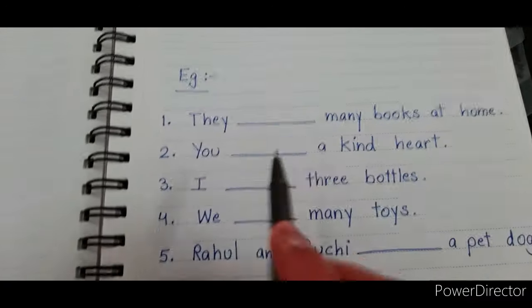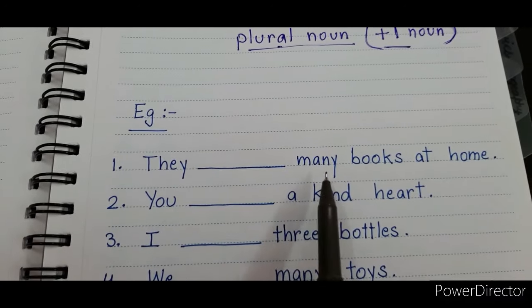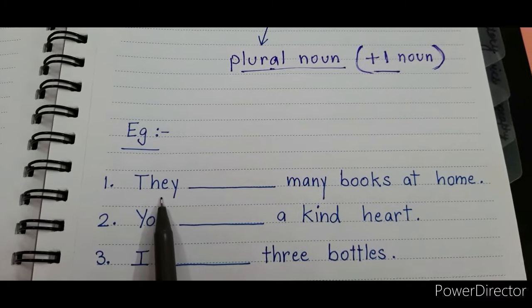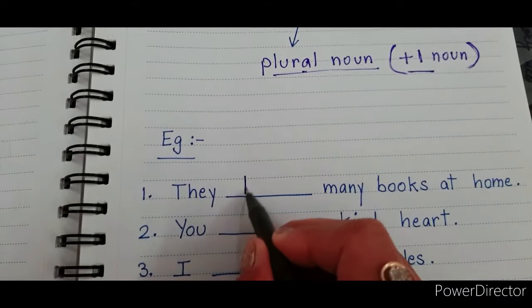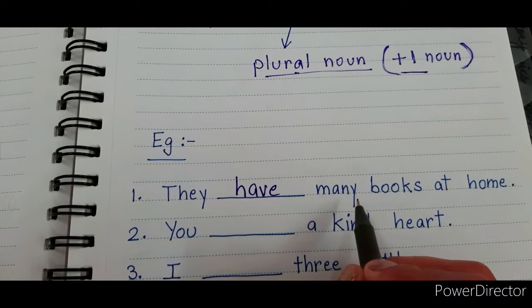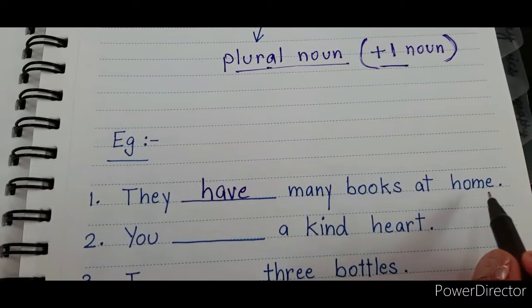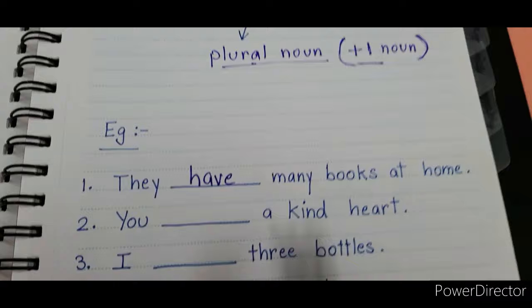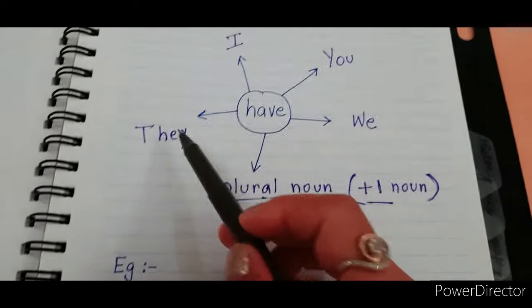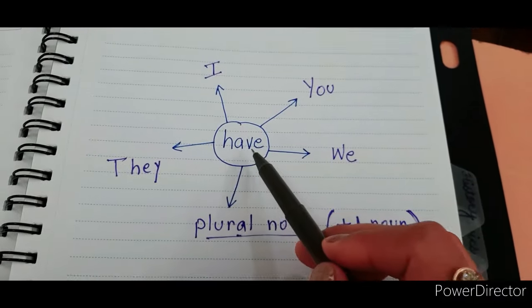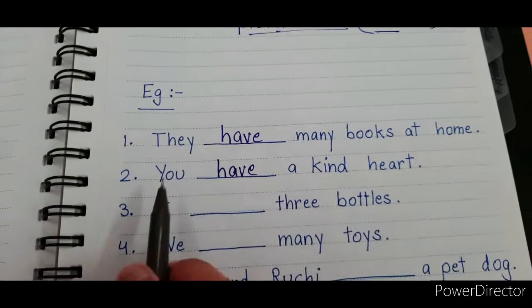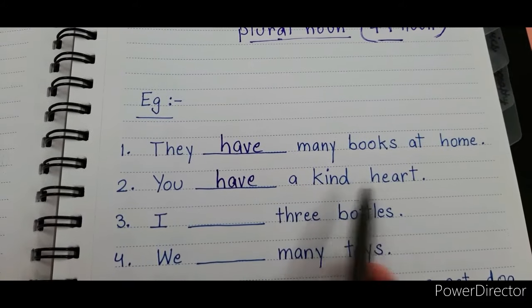Now let's see the examples. 'They ___ many books at home.' With 'they', we use 'have': 'They have many books at home.' Next: 'You ___ a kind heart.' With 'you', we use 'have': 'You have a kind heart.'